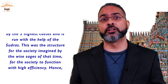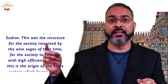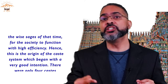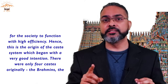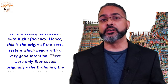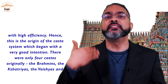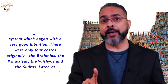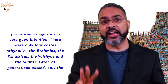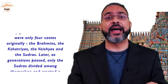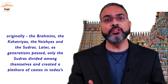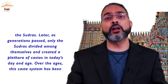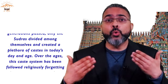This was the structure for the society imagined by the wise sages of that time, for the society to function with high efficiency. This is the origin of the caste system, which began with a very good intention. There were only four castes originally: the Brahmins, the Kshatriyas, the Vaishyas, and the Sudras. Later, as generations passed, only the Sudras divided among themselves and created a plethora of castes in today's day and age.